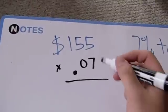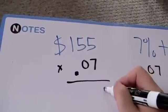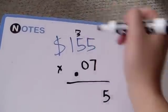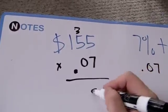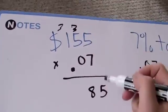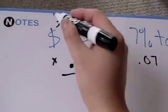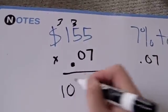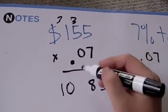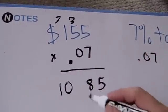We'll multiply $155 times .07 to figure out how much tax we have to pay. $155 times .07 is equal to $10.85. Don't forget to incorporate the decimal place in your answer.